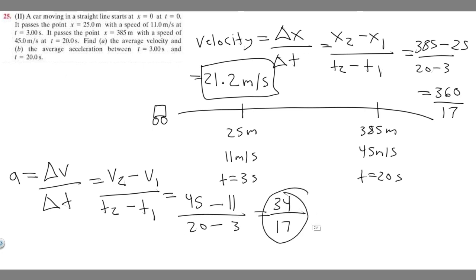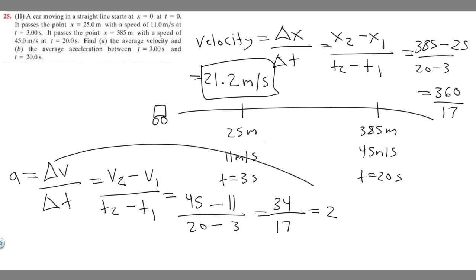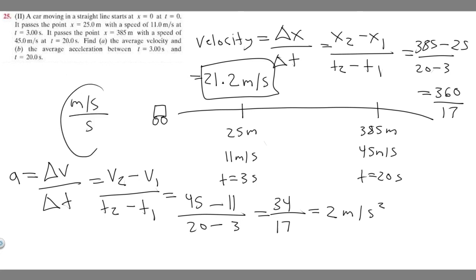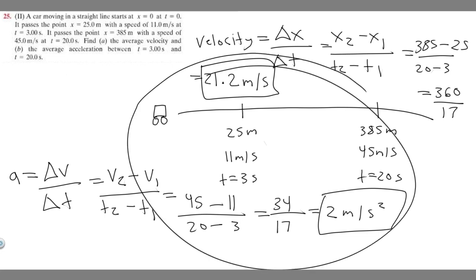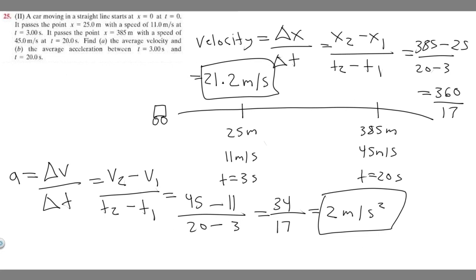34 divided by 17 equals 2. The units for acceleration are meters per second squared — you can see that because velocity is meters per second, divided by time in seconds, giving meters per second squared. So the answer to part B is 2 meters per second squared. These are your final answers, and that's how you solve this problem.